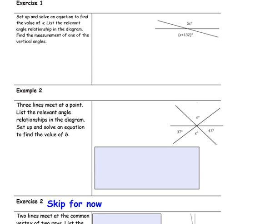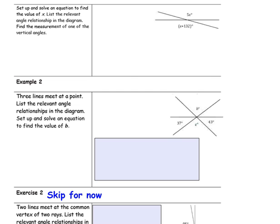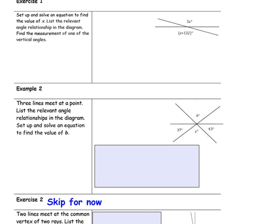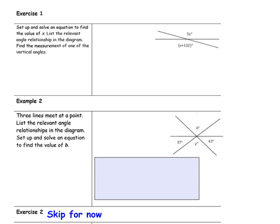Exercise 1: Set up and solve an equation to find the value of x. List the relevant angle relationships in the diagram and find the measurement of the vertical angles. Pause the video and complete that exercise on your own. When you solve this problem, you get an answer of x equal to 33 degrees. Then when you substitute 5 times 33 degrees, your final answer is 165 degrees for the angle.